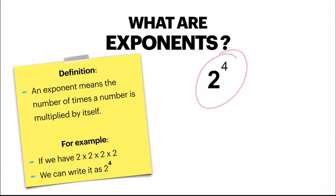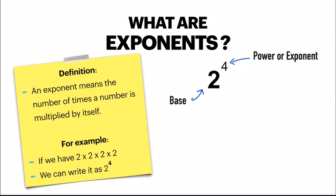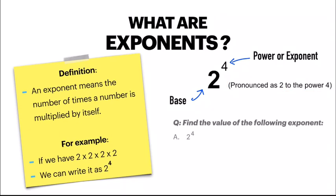So if you take an exponent like 2 to the power 4, the bigger 2 at the bottom is called the base, and the number on the top written in smaller letters is called the power or exponent. This term is pronounced as 2 to the power 4.